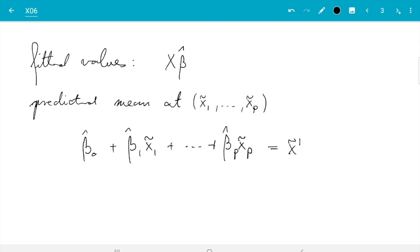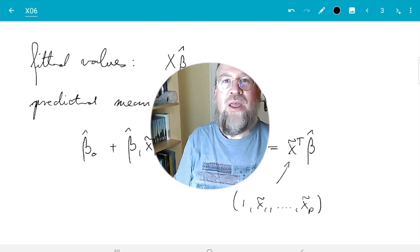So that we could write as x̃ᵀβ̂ if we take this to be the vector which is 1, x̃₁ up to x̃ₚ. So that was regression with weights. In the next video, I'll show you how to fit polynomials rather than straight lines to data. So see you soon.